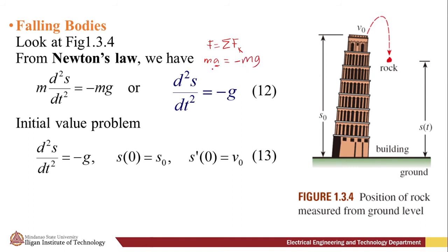Since we have acceleration, it's just the second derivative of our position s with respect to time. So d²s/dt² is substituted for our acceleration a. We divide both sides by m. We have this equation: d²s/dt² = -g.